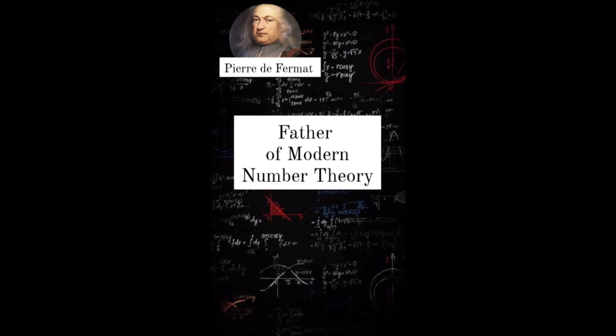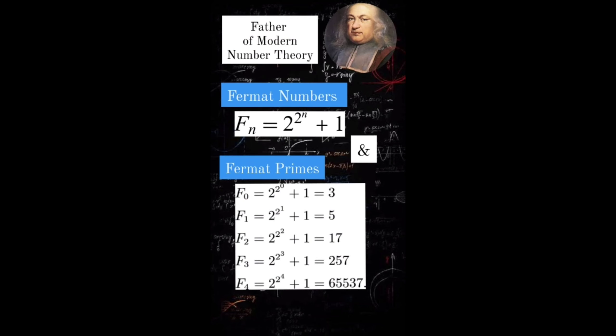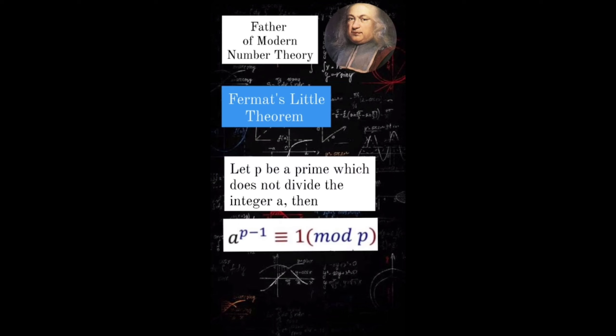Here are some: 1. Fermat numbers and Fermat primes. 2. Fermat's little theorem. Let p be a prime which does not divide the integer a, then a raised to p minus 1 is congruent to 1 modulo p.